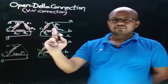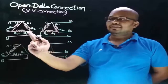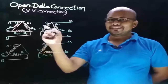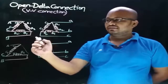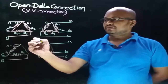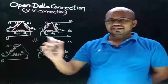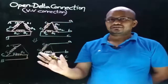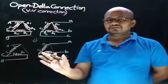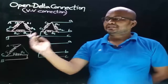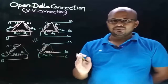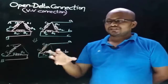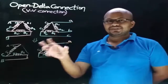So when one of the transformers in a delta-delta connected single-phase three-transformer bank gets failed, the resultant winding connection is called open delta connection. With this open delta connection, we can maintain the continuous supply to the load but with reduced capacity. Now let's determine the reduced capacity.